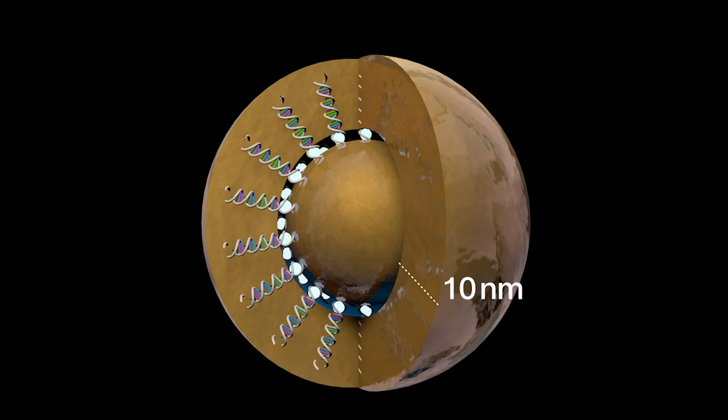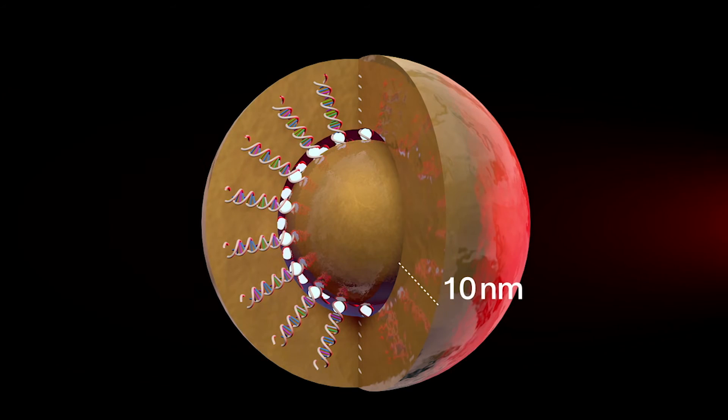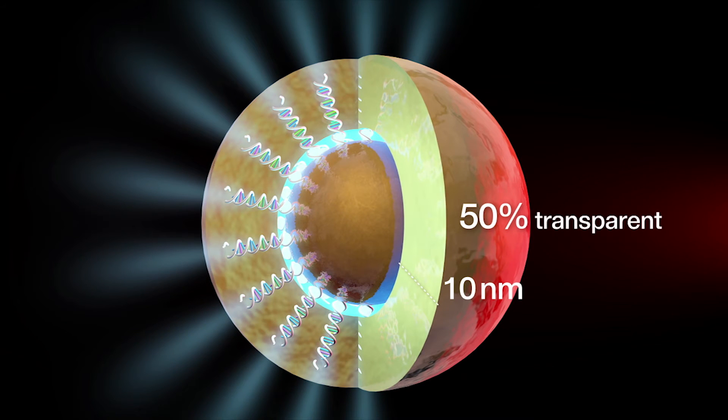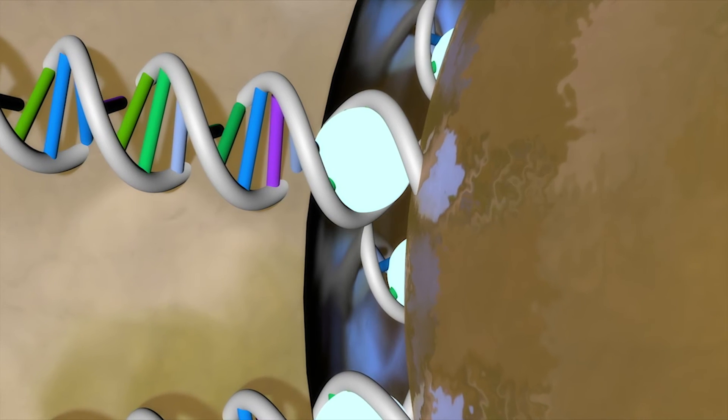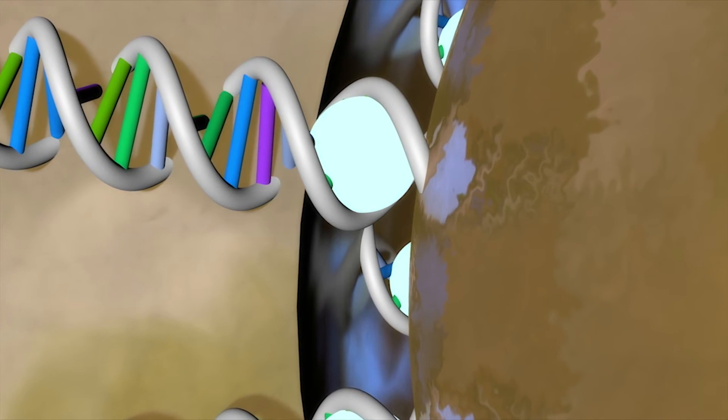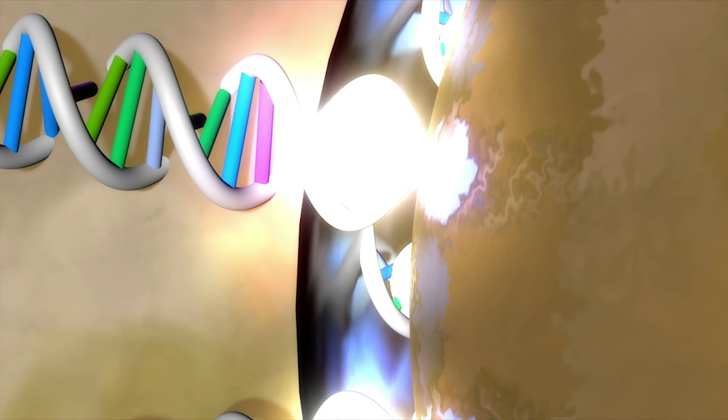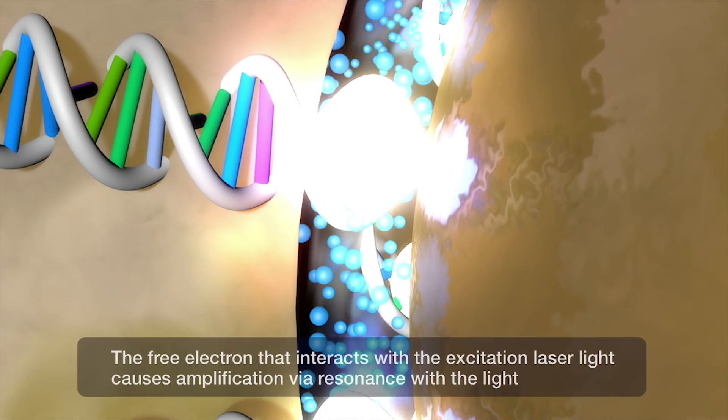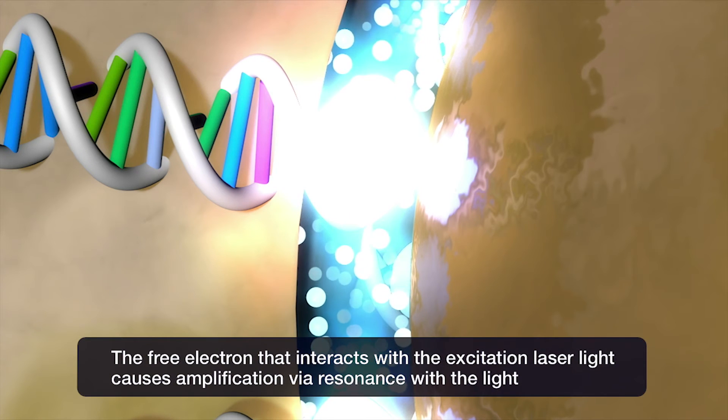10 nanometer gold shell is still more than 50% transparent. A laser light transmitted through the gold shell excites the Raman signal of the Raman dye molecules implanted at this spherical nanogap. The Raman signal is now amplified by gap plasmon formed by free electrons between the outer surface of gold core and the inner surface of the gold shell.